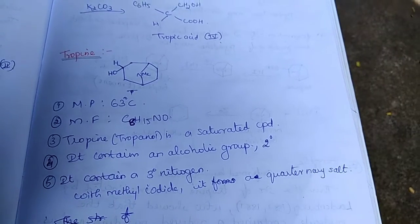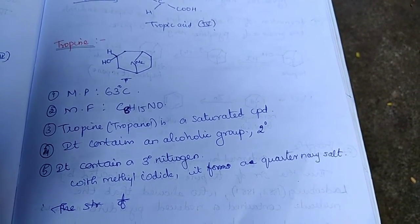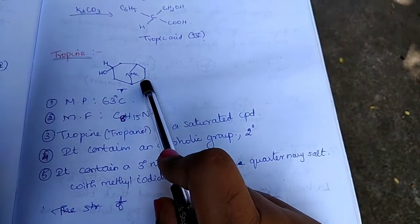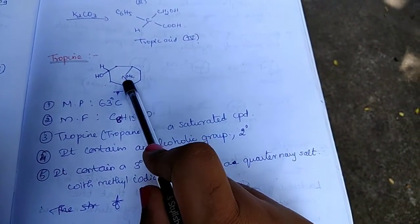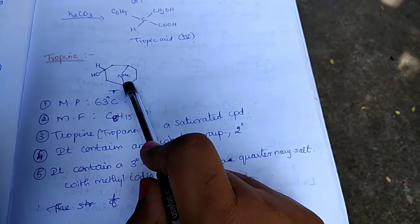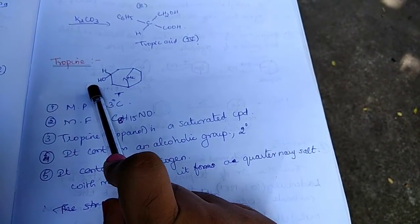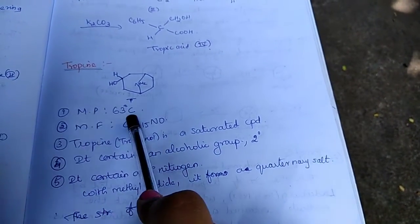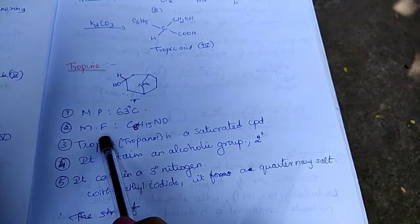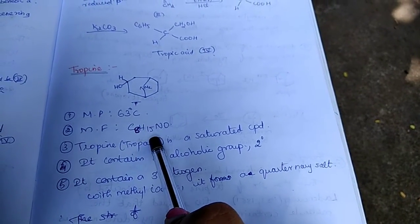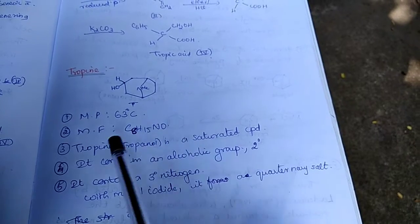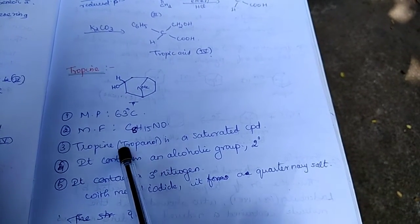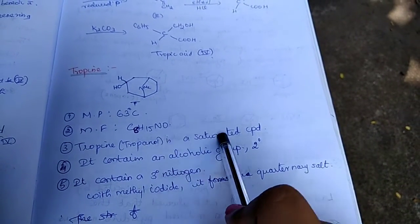And now we will move on to the structural elucidation of tropine. This is the structure of tropine, a seven-membered ring with a bridge of N-methyl group and an alcoholic group. The melting point is 63 degrees Celsius, the molecular formula is C8H15NO. Tropine, in other words tropanol, is a saturated compound.